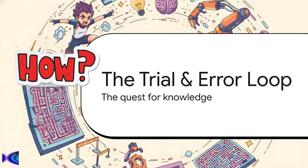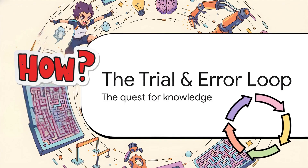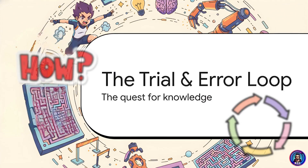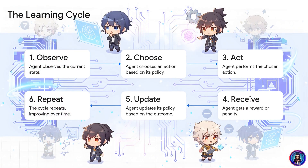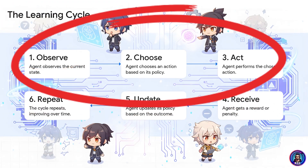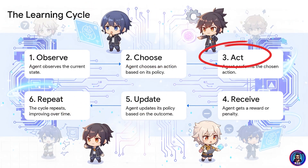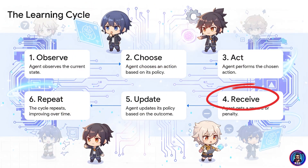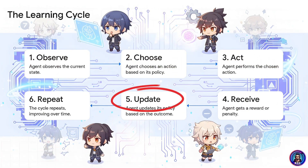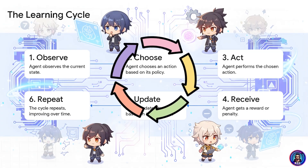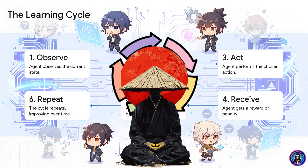How does learning actually happen? It happens through this constant trial and error loop — you can think of it like the agent's own personal training montage. First, the agent looks around and observes its current state. Then it picks an action based on its current strategy, which we call a policy. It acts, and the environment gives it a reward or a penalty. Based on that feedback the agent updates its strategy, then repeats it all over again — thousands, maybe millions of times. That's how it builds mastery.